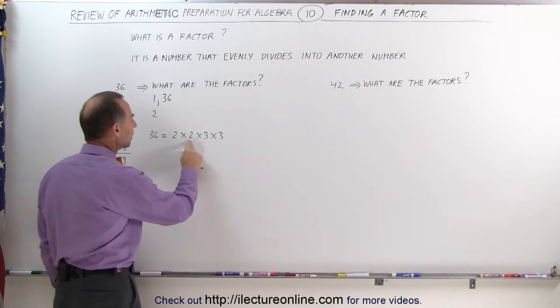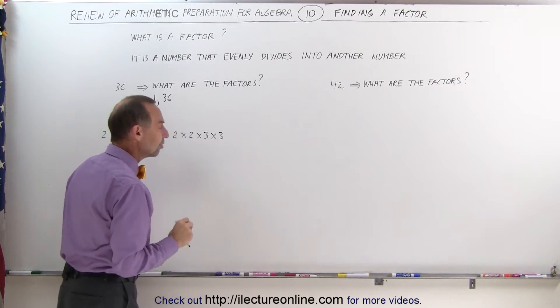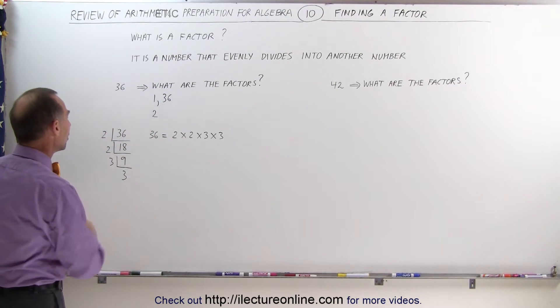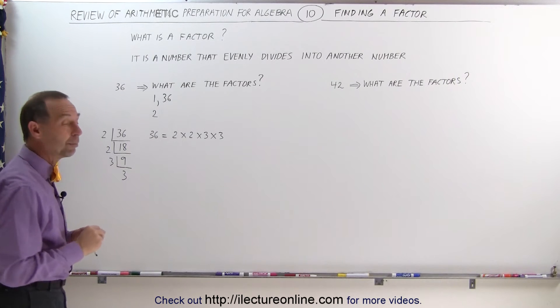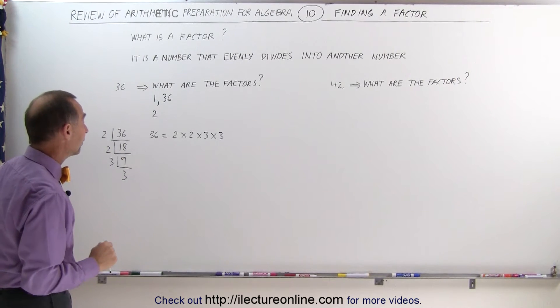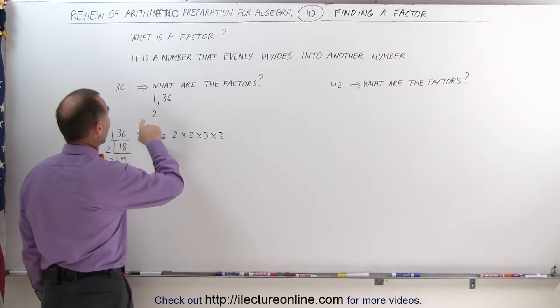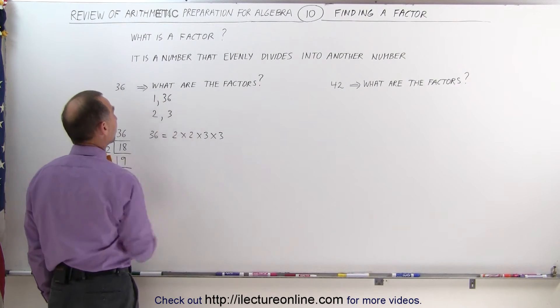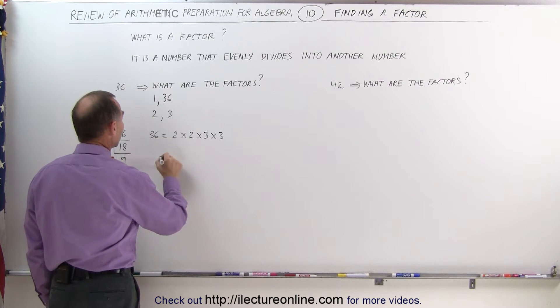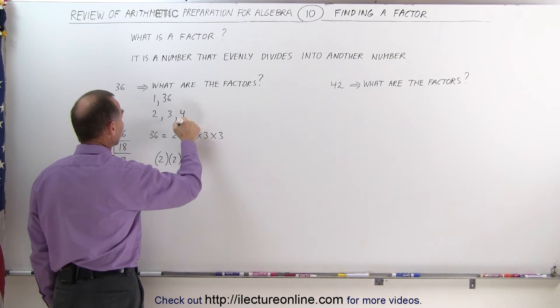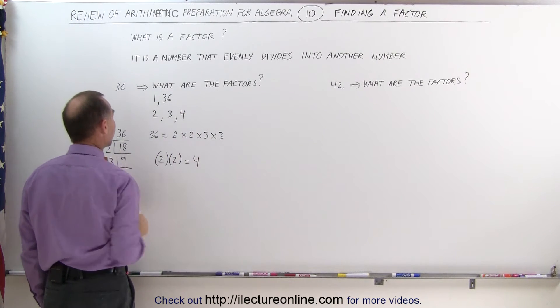Now once you have all the factors in terms of multiples of the smallest prime numbers that fit into 36 evenly, you can come up with all the other factors by multiplying these together. For example, factors at this point become 2 and 3 as well as 1 and 36. But when you multiply 2 times 2, you get 4. That is also a factor of 36.